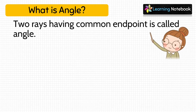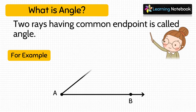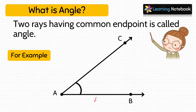Two rays having a common end point is called an angle. For example, here ray AB and ray AC are forming an angle. The two rays are called arms of the angle and the common end point is called the vertex of the angle.